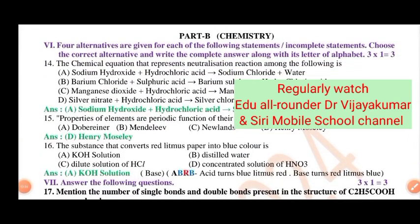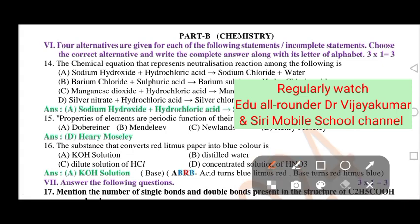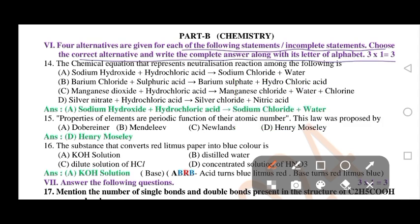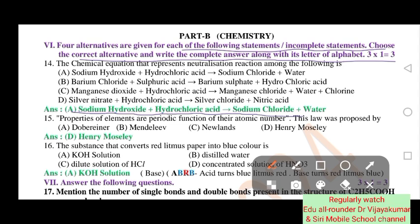In part B, chemistry: four alternatives are given for each of the following statements. Choose the correct alternative and write the complete answer. The reaction involves sodium hydroxide, hydrochloric acid, sodium chloride and water. Properties of elements are periodic functions of their atomic number.